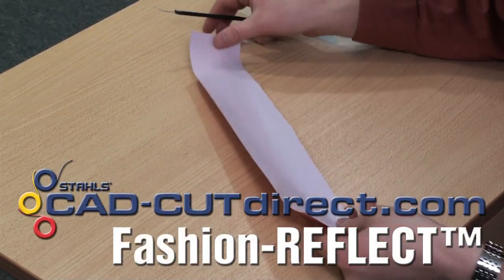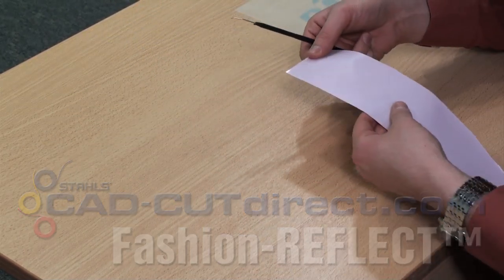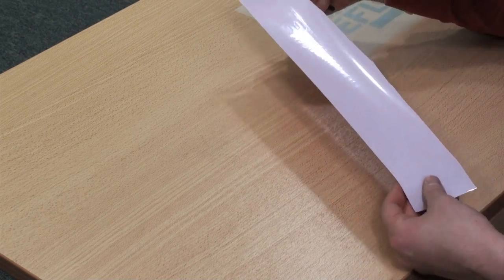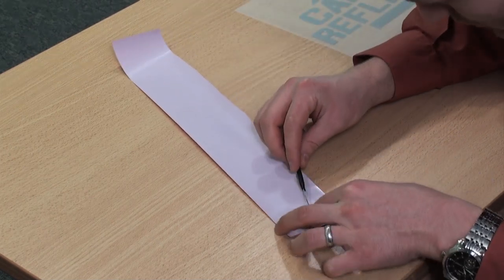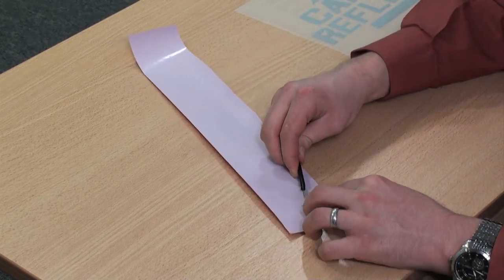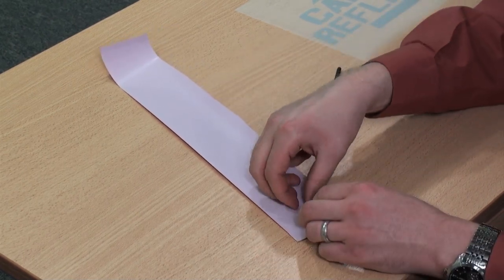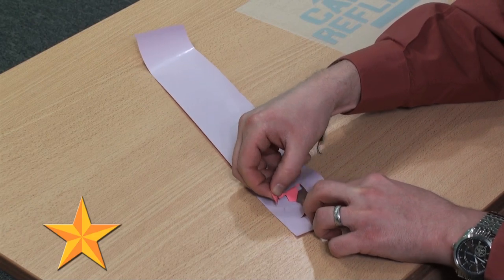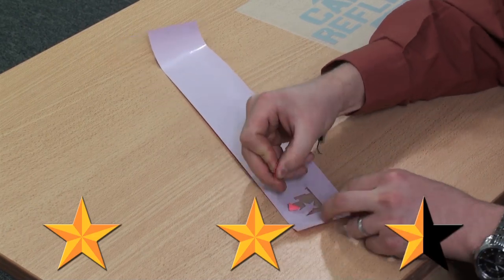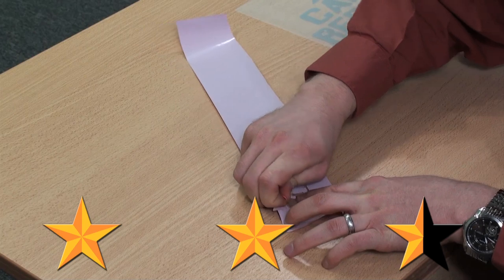Next is the Fashion Reflect. With this one, it's a little bit more difficult to see the cut lines. Once you find the weed border, which is the box I placed around each design, simply weed away the excess material. On a scale of 0 to 5 stars for weedability, I would rank this a 2.5.